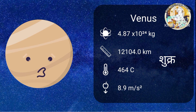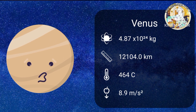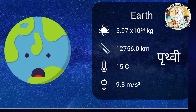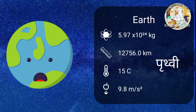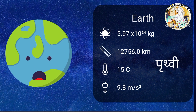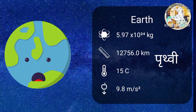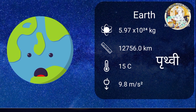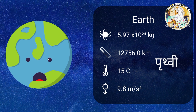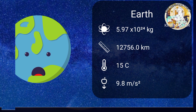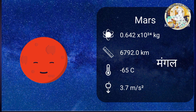It is the hottest planet in our solar system. E-A-R-T-H, Earth, Prithvi. Our home planet is the third planet from the sun and the fifth largest planet.